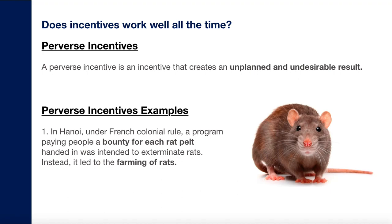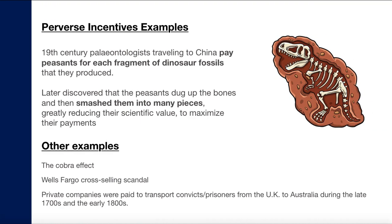Examples of perverse incentives: In Hanoi, under French colonial rule, a program paid people a bounty for each rat tail handed in, introduced to eliminate rats that were overpopulating the area. Initially people caught rats, but once they knew there was an incentive for each rat tail, people actually started breeding rats — a perverse behavior. This is a classic example of a perverse incentive.